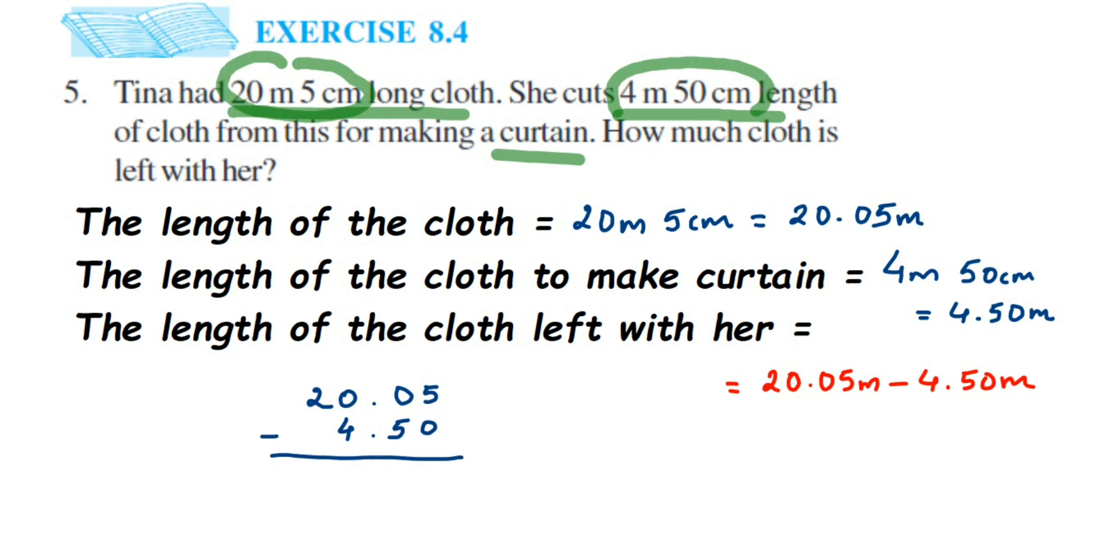Now to subtract: 5 minus 0 is 5. 0 minus 5 we cannot subtract, so we're going to take a borrow. We have a 0, so it's going to take a borrow from the 2. 2 will become 1, so this will become 9. 10 minus 5 is 5, and we have decimal, put the decimal. 9 minus 4 is 5, and we have 1. So 15.55 is the answer.